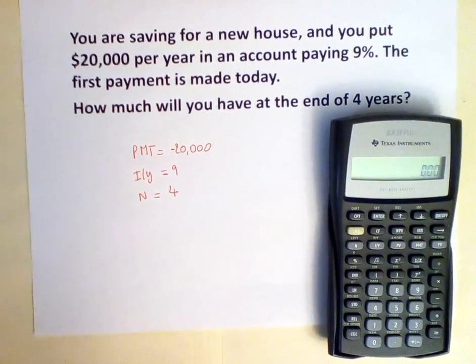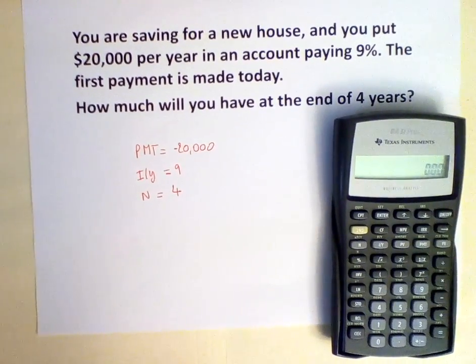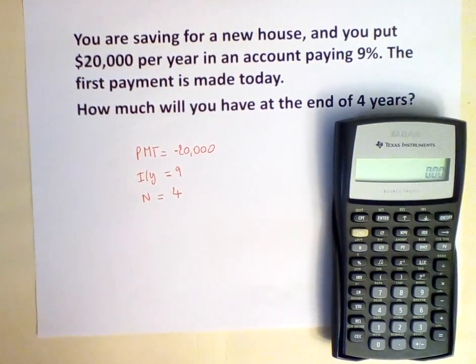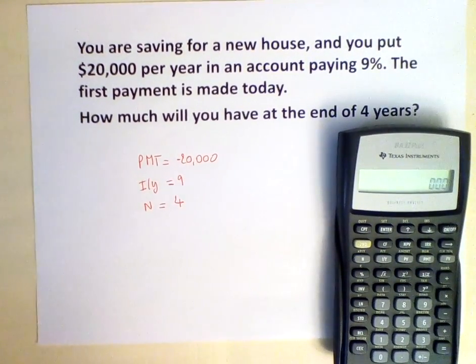You are saving for a new house and you put $20,000 per year in an account paying 9%. The first payment is made today. How much will you have at the end of 4 years?